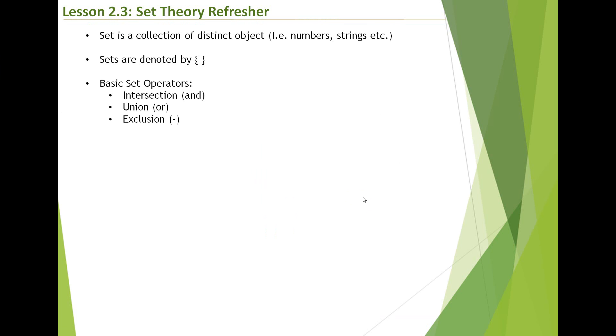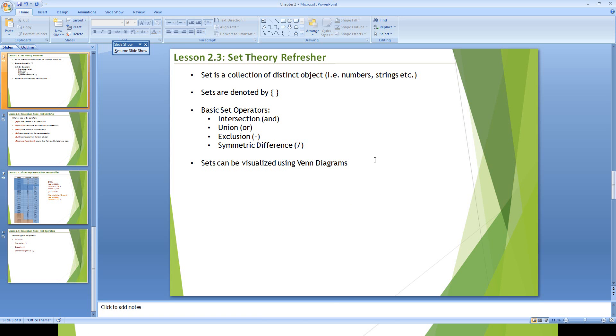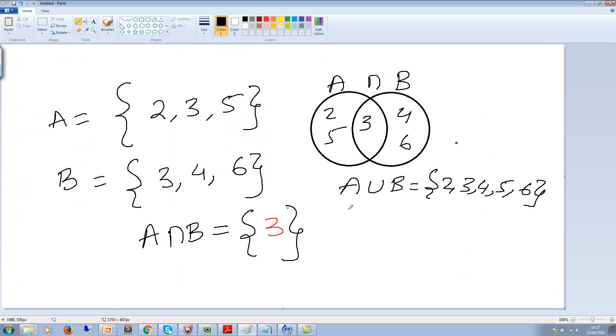And then we have A exclusion or the minus sign. So A exclude B means we take all the values in A, and then see if there are any values which are common between A and B, we take out those values. So in our case, the values will be 2 and 5. We will not use 3 because 3 is common between A and B, which is why A exclusion B.